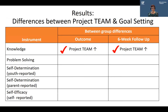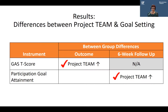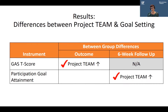Here's what we found. Differences between the two groups were significantly better for Project TEAM on knowledge of parts of the environment, strategies to change the environment, and disability rights laws. We also found differences between Project TEAM and the goal group on the attainment of all of their goals and their participation goals, even after Project TEAM ended. This means that after Project TEAM was over, young adults who completed it were more likely to achieve their goals, even without the help of facilitators and peer mentors.